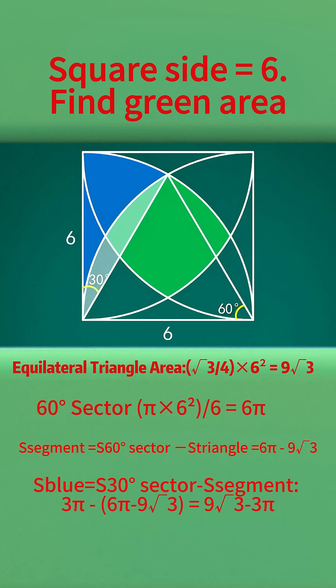Then use the 30 degree sector area minus the segment area to get the blue area, which equals 9 times square root of 3 minus 3 times pi.